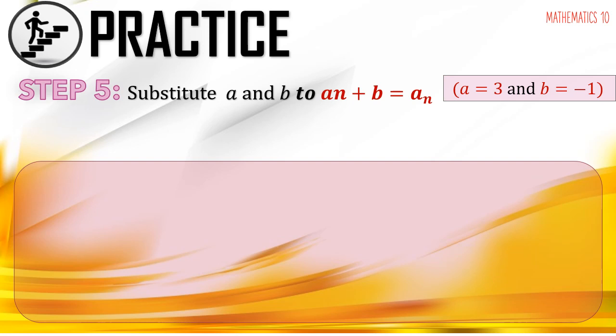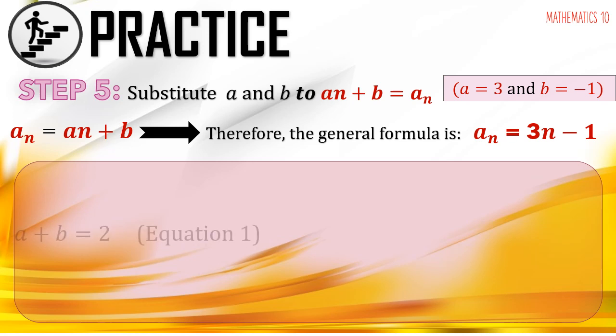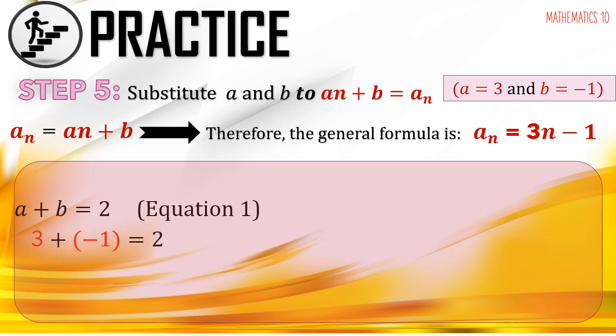For step 5, substitute the values of a and b into the general formula. Our answer is a sub n equals 3n minus 1. To check, substitute into equation 1: a plus b equals 2 gives 3 plus negative 1 equals 2, so 2 equals 2 — correct. And in equation 2: 2a plus b equals 5 gives 2 times 3 plus negative 1, which is 6 plus negative 1 equals 5, so 5 equals 5 — correct.